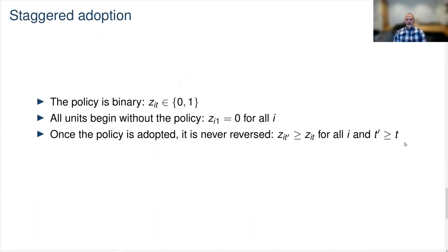A setting that will be used throughout all of our examples in the rest of the series is a setting that we'll call staggered adoption. In this setting, the policy of interest is binary, so it takes values 0 or 1, and each observational unit may adopt the policy at a different time.